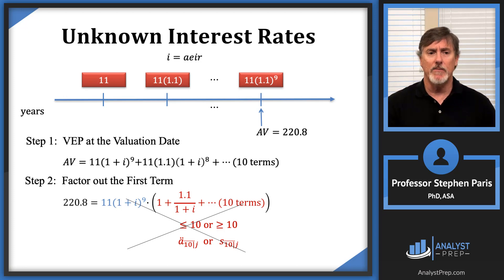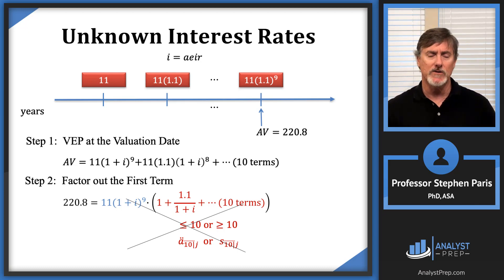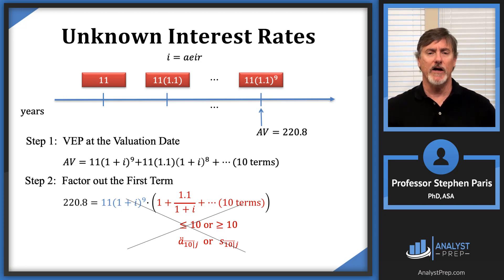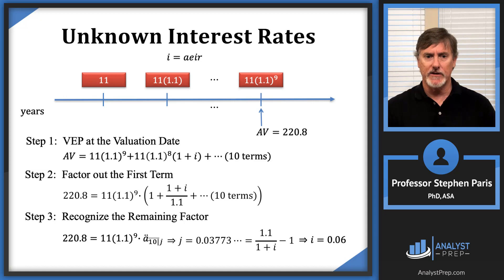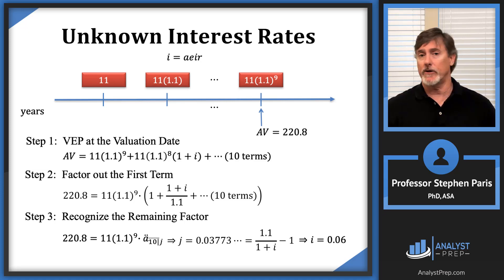The key point is that with unknown interest rates you are not free to choose whichever order you value the payments in. If you choose the wrong order you'll get stuck, as shown. Going back to the correct solution: starting with the last payment makes the problem solvable. This applies whether the unknown is the annual effective interest rate or the percent increase or decrease of payments. I'll have one more unknown interest rate example in the next video — it's a little trickier — so I'll see you there.